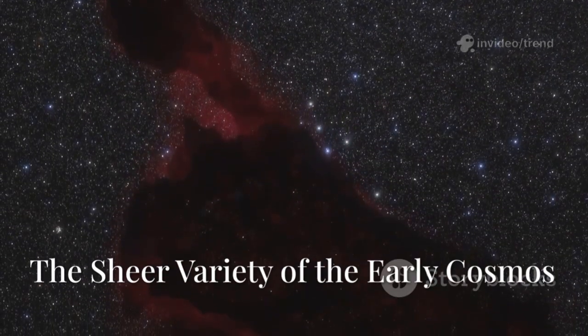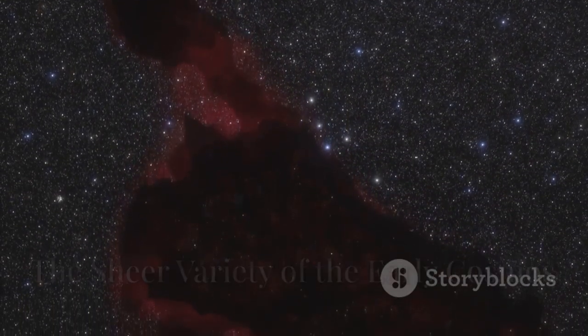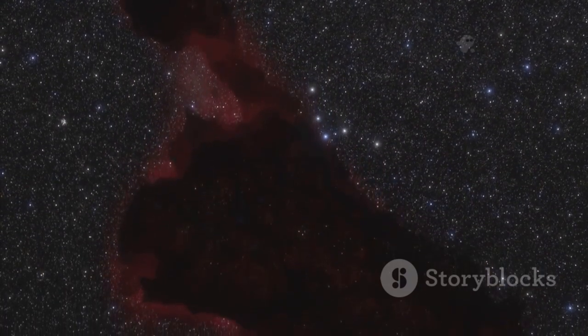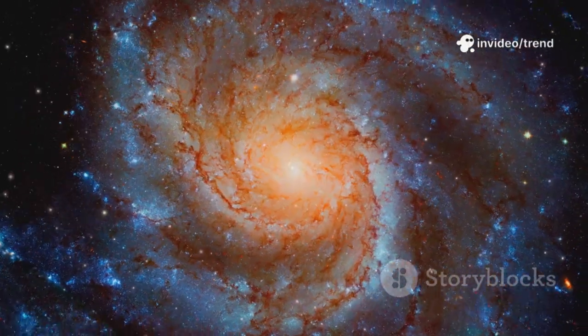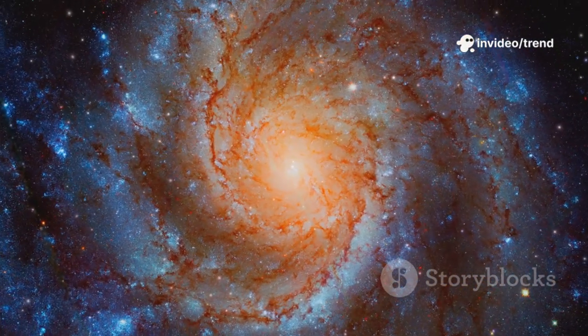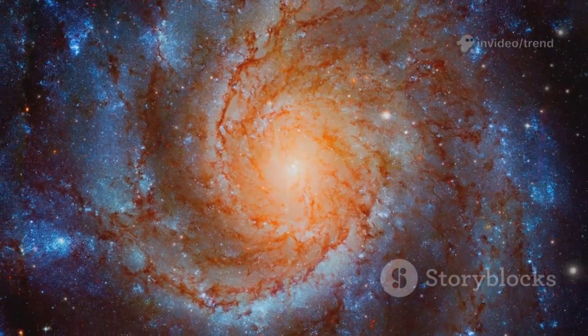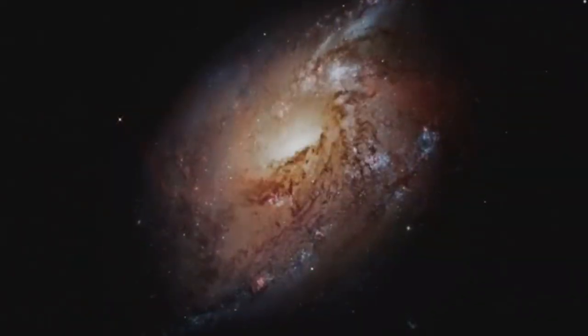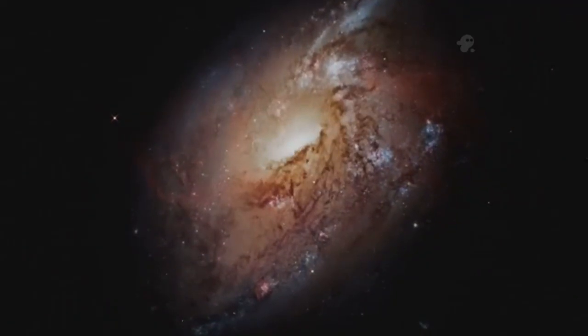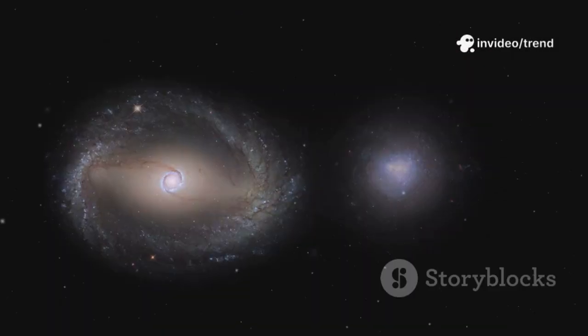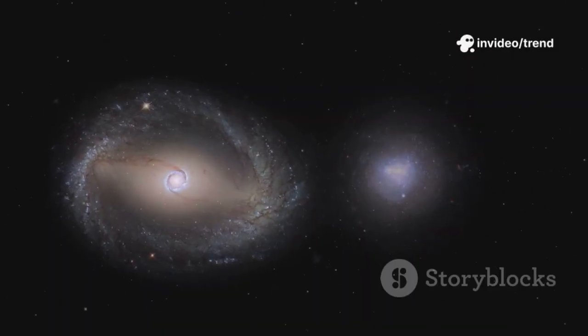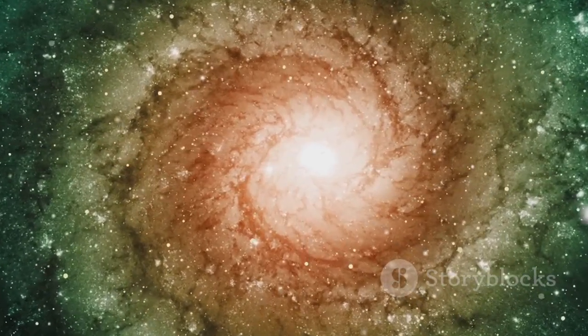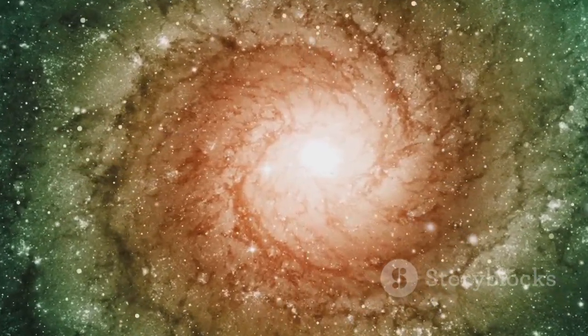Webb's deep field images reveal not just numbers but diversity, a cosmic ecosystem in all its forms. The 750 new galaxies aren't just red dots, they're a menagerie of shapes and stories. Some are compact blue clumps, furious star nurseries. Others are elongated, clumpy, and chaotic, shaped by collisions and mergers. We're witnessing galactic creation and cannibalism live from 13 billion years ago.